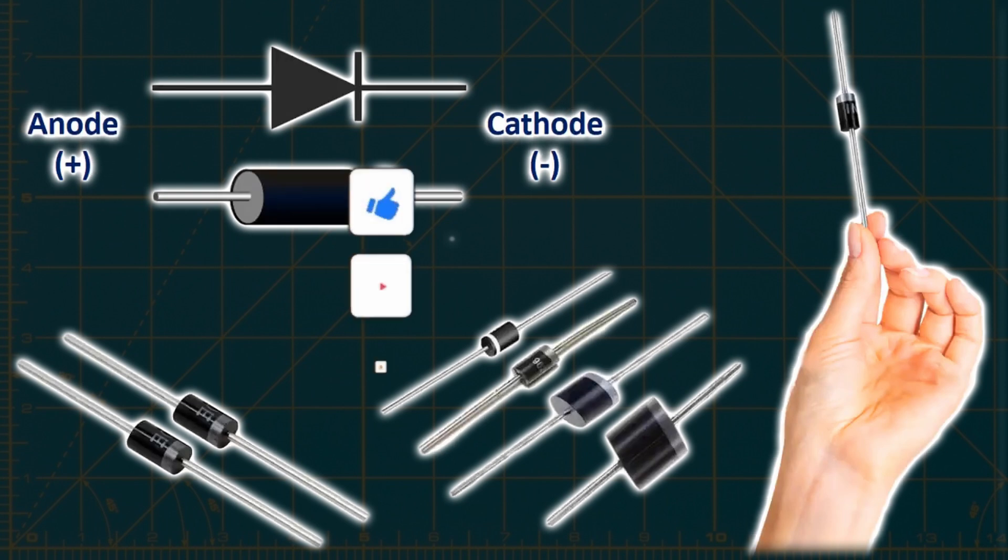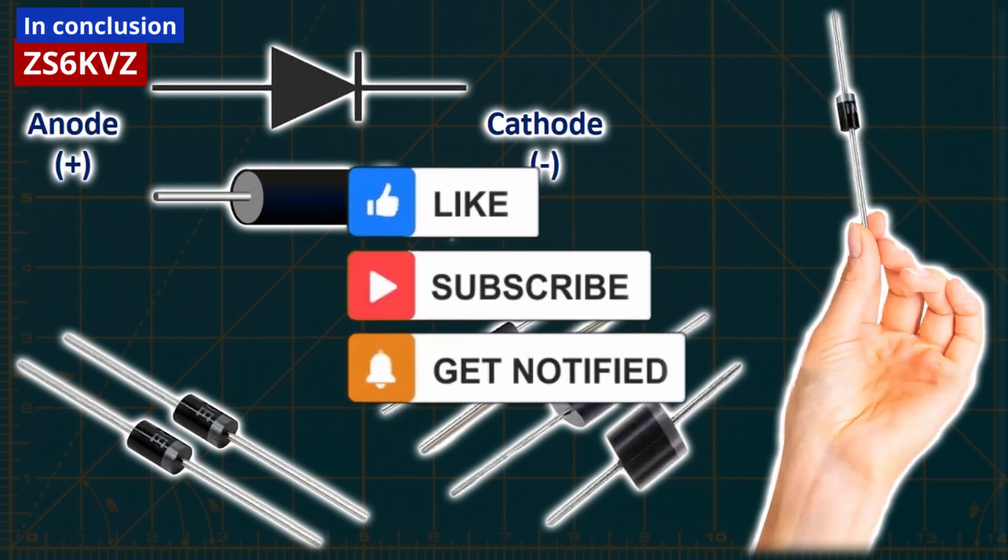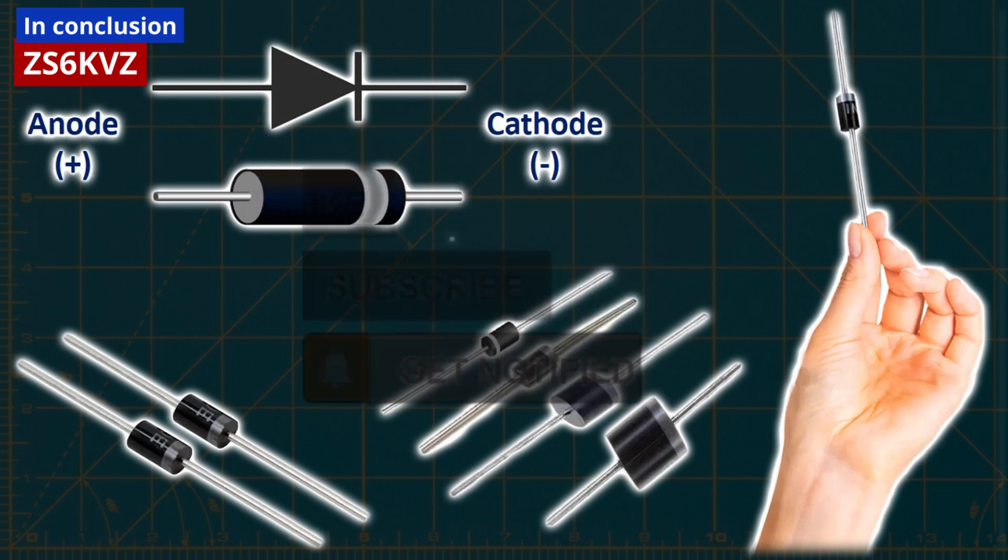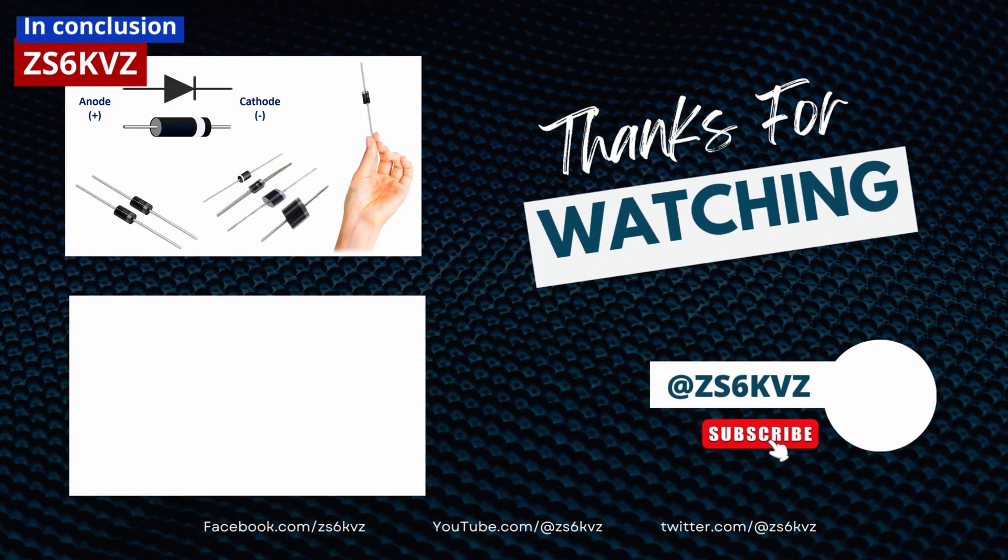In this lesson, we have explored the structure and working principle of diodes. We have covered their atomic configuration, doping process, N-type and P-type materials, as well as their usage in electronic circuits. I hope you found this information useful and enjoyed the lesson. Thank you for watching, and I look forward to seeing you in our next video.